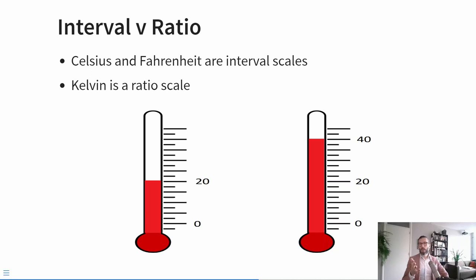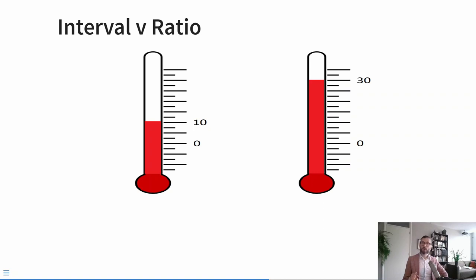Kelvin, on the other hand, is a ratio scale. It has an absolute zero point at which atoms stop moving — you cannot get any colder than that. So you could use Kelvin to calculate meaningful temperature ratios, but you cannot do that with Celsius or Fahrenheit. To illustrate this problem, look at these two thermometers. One indicates 20 degrees and the other indicates 40 degrees. Visually it looks as if the temperature in the right thermometer is twice as high. But the zero point is arbitrary, so if we change the zero level, suddenly it looks like the right thermometer has three times the temperature of the left. In other words, ratios are not meaningful if there's no consensus about the zero point.